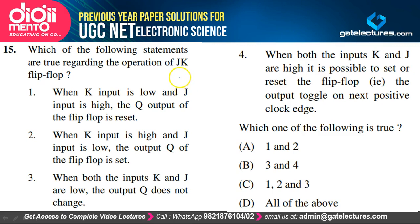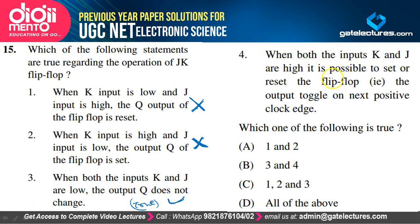Regarding the operation of a JK flip-flop: when K is low and J is high, the Q output is reset — false. When K is high and J is low, Q is set — also false. When both K and J are low, the output Q does not change — true. When both inputs are high, the output toggles on the next positive edge — true. Only statements 3 and 4 are correct, so option B satisfies the explanation.